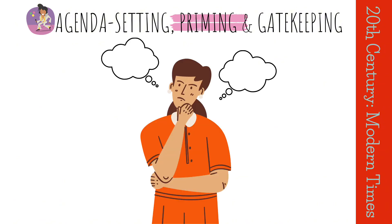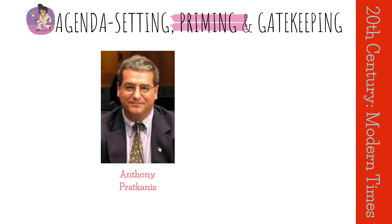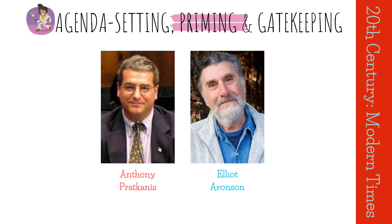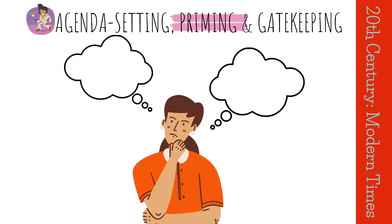Priming theory is a related theory that explains how the media can influence our evaluations of people and events. This theory was first proposed by Anthony Parkins and Elliot Aronson in their study of how the media can influence people's attitudes towards political candidates. They found that when people are primed with certain information, they are more likely to use that information when evaluating a person or an event.